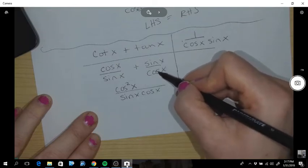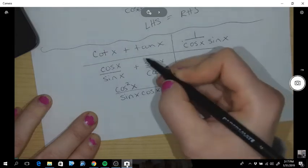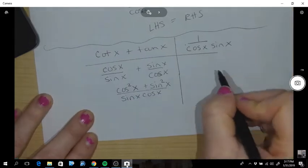If I put this over the common denominator I must times it by sin x. So this becomes sin squared x.